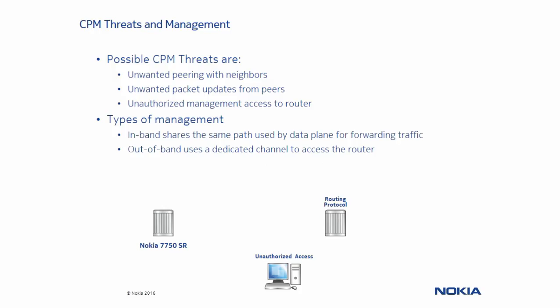Here are some threats that the CPM needs to be protected from, such as an unwanted OSPF adjacency or unwanted packet types that could send incorrect routing information, causing suboptimal routing. Perhaps unauthorized access could be given to a management station that is not authorized to make configuration changes to the router.